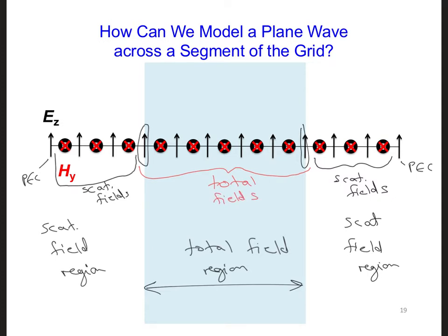Because we're dividing the grid up in this manner, this approach for modeling a plane wave is called the total field, TF, scattered field, plane wave source condition.